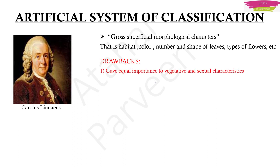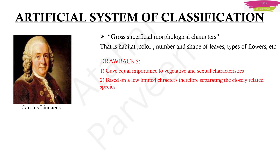This classification system gave equal importance to vegetative and sexual characteristics, which is not ideal because vegetative characteristics differ due to changes in seasons and environment. Another drawback is that it was based on very few limited characteristics, so even closely related plants that did not look similar were separated — meaning closely related species were placed in different groups. The system of classification and the scientist who gave it are very important to remember.